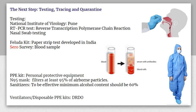Some institutes conducted sero surveys. A sero survey involves taking a blood sample. When blood is kept still, the blood cells settle at the bottom and on top is the liquid serum, which contains antibodies. The Serum Institute of India is also a famous name associated with this concept.